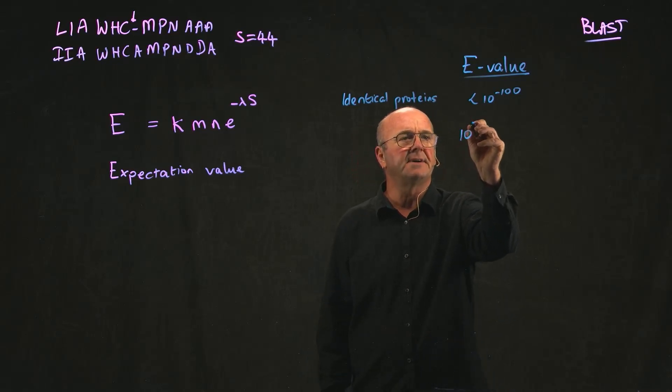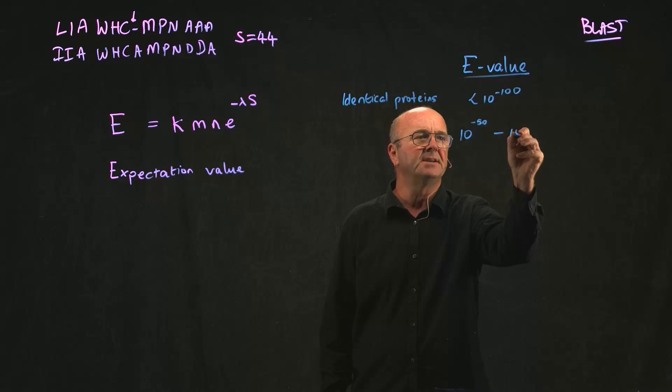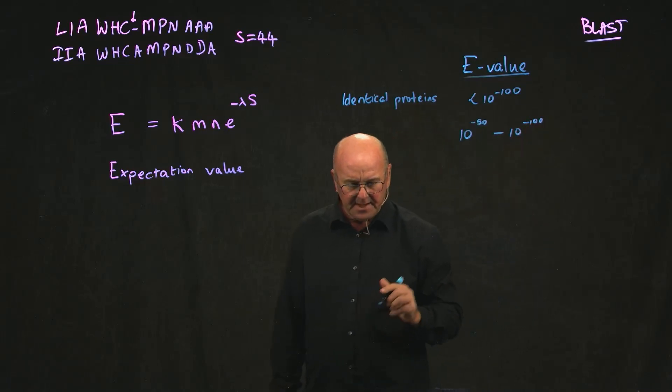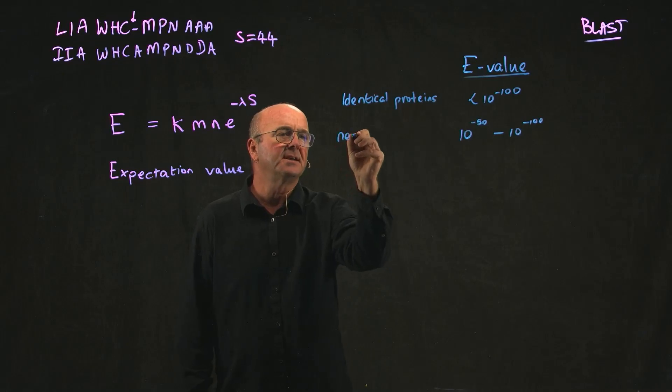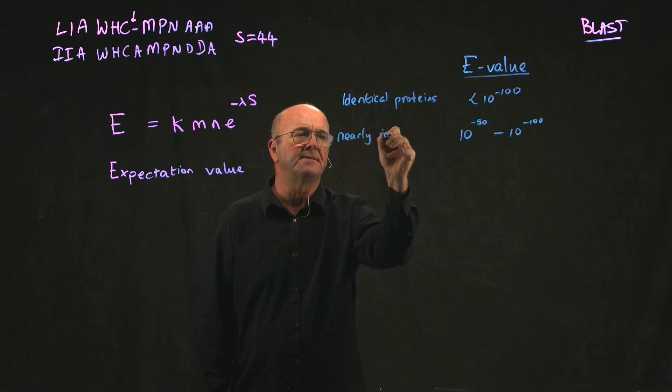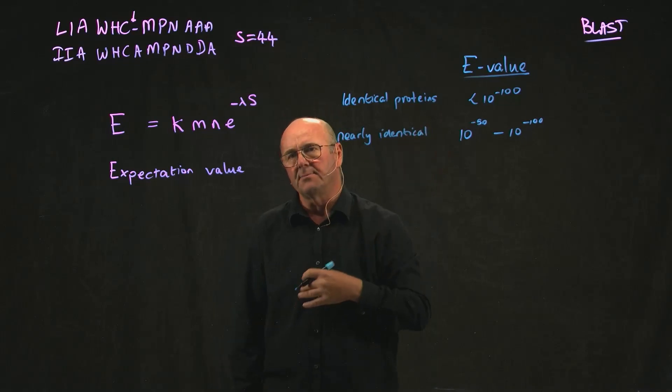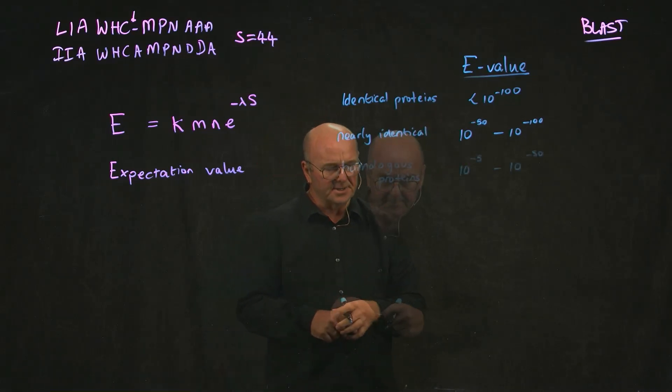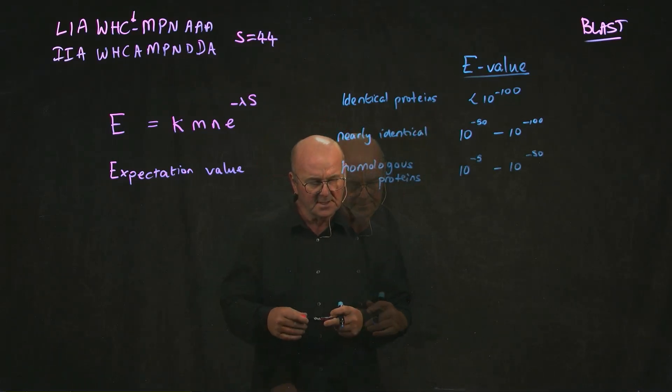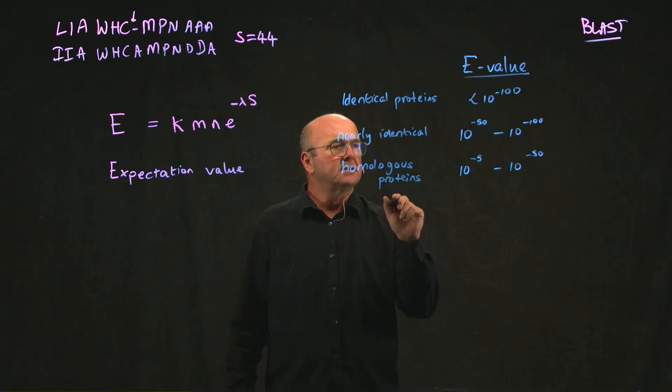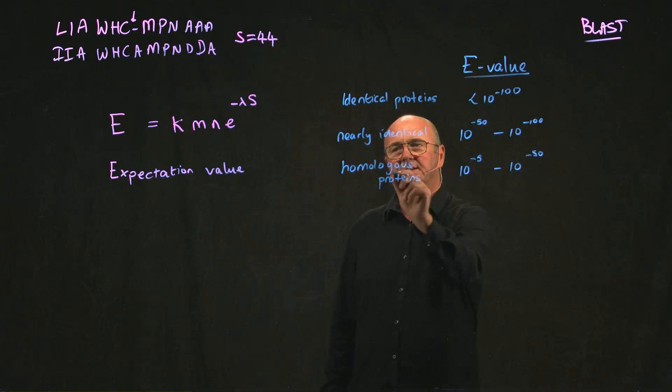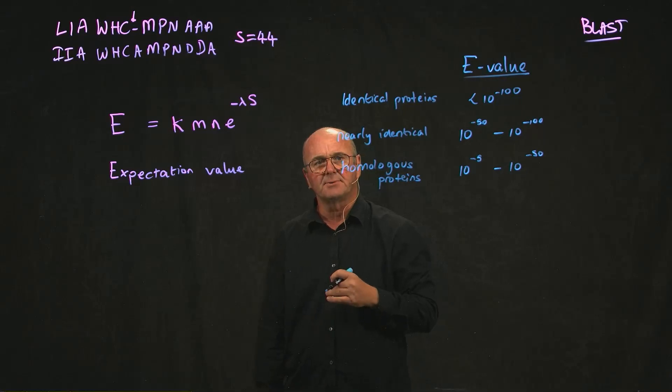If you have an e value from 10 to the minus 50 to 10 to the minus 100, then they're essentially nearly identical. They're going to be very, very similar, and the proteins are going to be from highly related organisms. So 10 to the minus 5 to 10 to the minus 50, then you have homologous proteins.